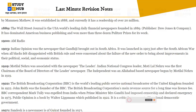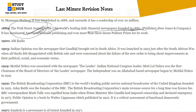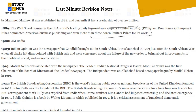In 1889, the Wall Street Journal was founded in the USA as a financial newspaper by publisher Dow Jones and Company. It has dominated American business publishing and won more than three dozen — about 36 — Pulitzer Prizes. You should know which newspaper belongs to which country, when it was launched, who its publisher is, and what awards it has received.